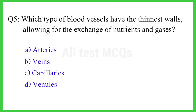Q5. Which type of blood vessels have the thinnest walls, allowing for the exchange of nutrients and gases? The right answer is option C. Capillaries.